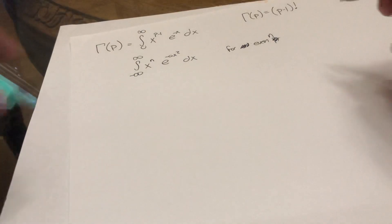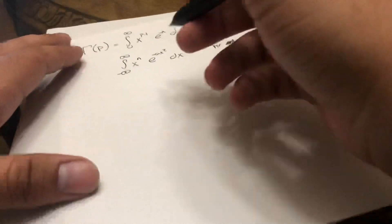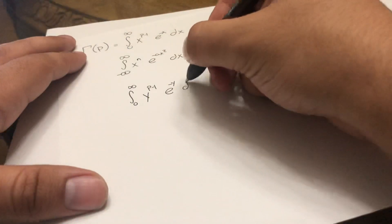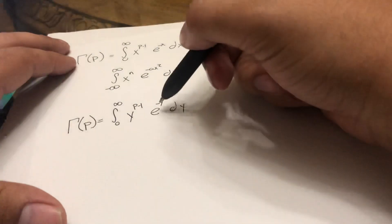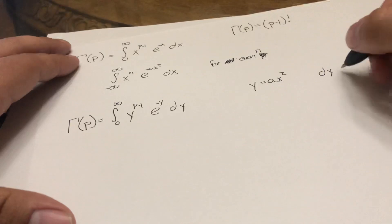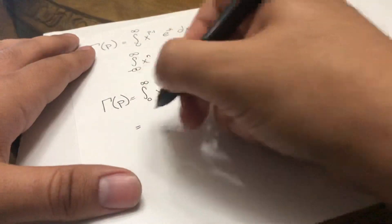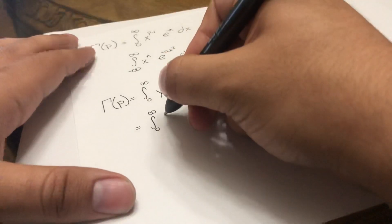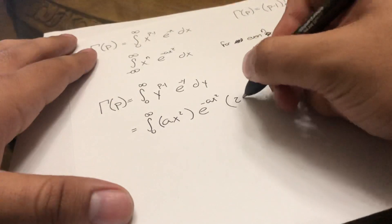So let's begin. What we're going to do is transform the original gamma function. We're going to rewrite the gamma function in terms of a dummy variable — so instead of x, we're going to use y. So we have the integral from 0 to infinity of y to the p minus 1, e to the negative y dy. Now we're going to do a substitution: y is equal to ax squared. We have to find the derivative because we have a dy term, and that's going to be equal to 2ax dx. Plugging these in, we get the integral from 0 to infinity of (ax squared) to the p minus 1, e to the negative ax squared, times 2ax dx.